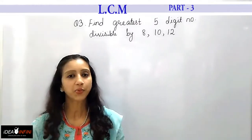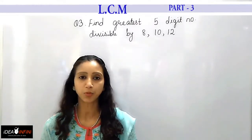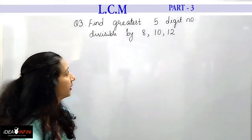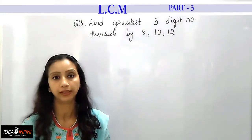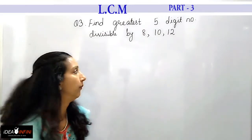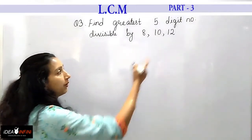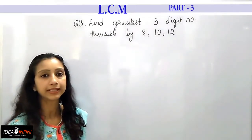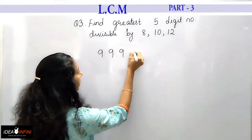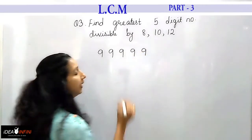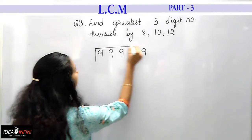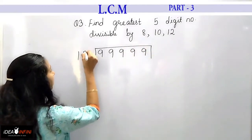In this next question, there is a slight modification: find the greatest 5-digit number which is divisible by 8, 10, and 12. The procedure is exactly the same. We already know the LCM is 120. So we write the greatest 5-digit number, which is 99999, and then divide it by the LCM of 120.